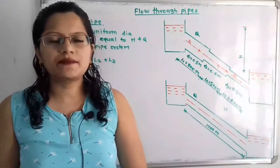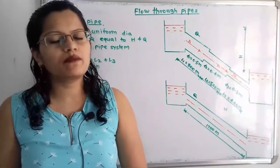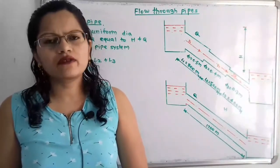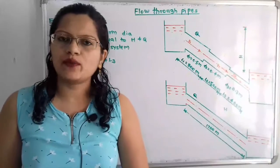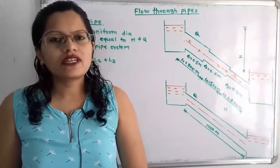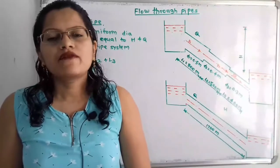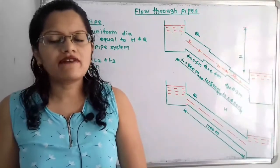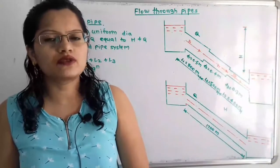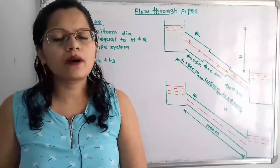Hello friends, this is Priyanka. Today we are going to solve a problem on flow through pipes. In this video we are going to solve a problem about equivalent pipe. An equivalent pipe is a pipe with uniform diameter having loss of head and discharge equal to the loss of head and discharge of a compound pipe system.